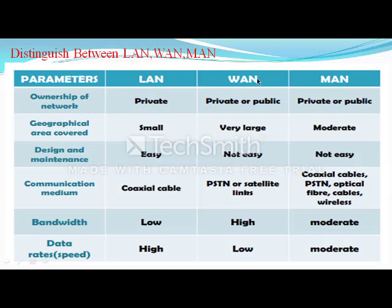LAN is private. WAN and MAN can be private or public. LAN is a local area network. WAN covers a wide area. MAN covers a metropolitan area. Geographically, the area covered by LAN is small, WAN covers a very large area, and MAN covers a moderate area. In terms of design and maintenance, LAN is easy. Connecting many LANs to a WAN is not easy.